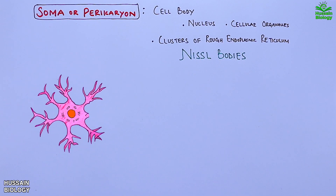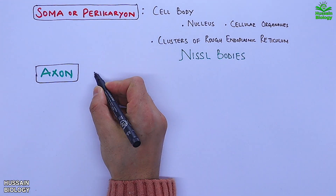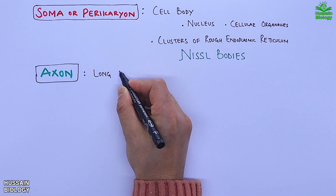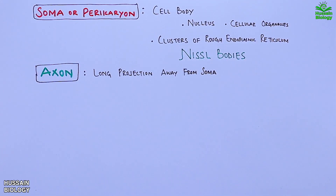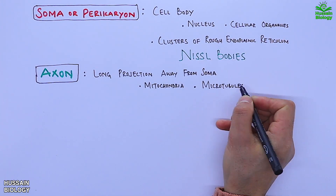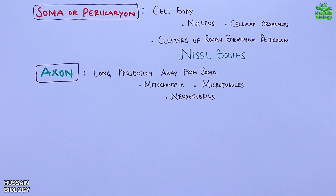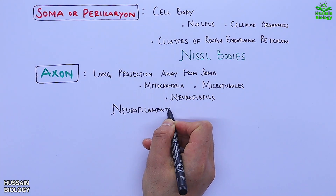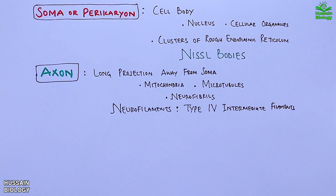The second important part is the axon, which is a long projection away from the soma. It mainly conducts the nerve impulses. In the axon we have mitochondria, microtubules, and neurofibrils. The neurofilaments in the axon are type 4 intermediate filaments.